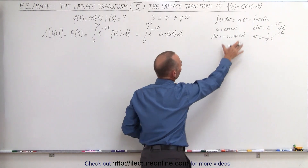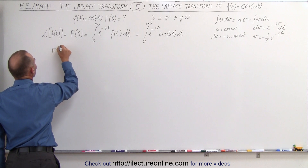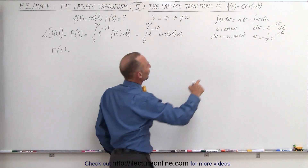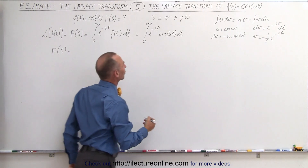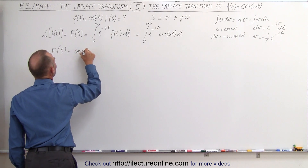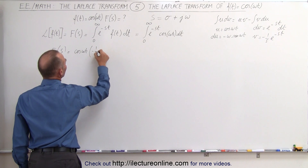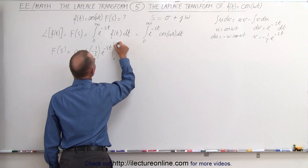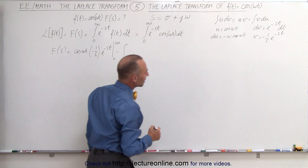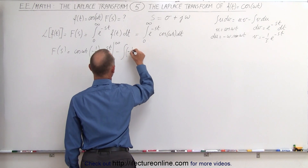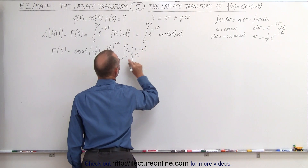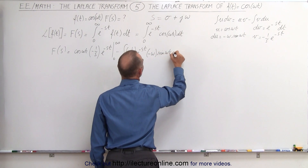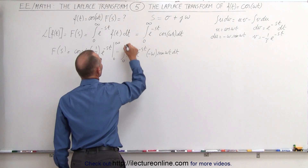Now we can plug that into our equation. The Laplace transform F(s) can be written as u·v, evaluated from 0 to infinity, minus the integral of v du. So we have cos(ωt) times −(1/s)·e^(−st), evaluated from 0 to infinity, minus the integral from 0 to infinity of −(1/s)·e^(−st) times −ω·sin(ωt) dt.